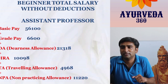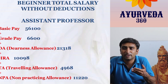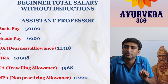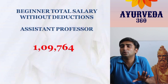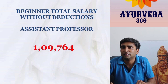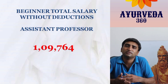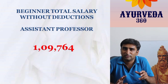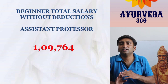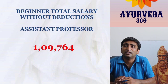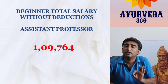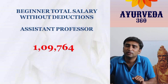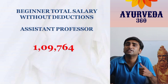Adding up all components — basic, grade pay, DA, HRA, TA, and NPA — without any deductions, an Assistant Professor at NIA currently earns approximately ₹1,09,764, roughly ₹1.10 lakhs gross. After deductions like TDS and NPS, the net amount will differ. This figure is current and will change as DA is revised every six months.